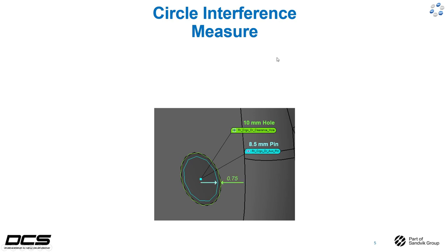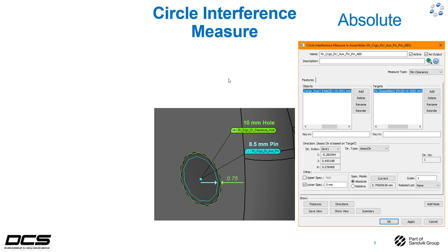Radially speaking, we have zero point seven five millimeters of clearance between the pin and the hole — one point five overall, radially zero point seven five. Let's take a look at this measurement using absolute spec mode. In our objects and targets we have a ten mil hole and an eight and a half mil pin. Our spec mode is absolute, and the current nominal condition is displaying radially as zero point seven five. After selecting that, we just want to make our lower spec zero — anything under zero is a crashing or interference condition and will display red.